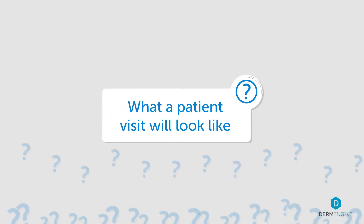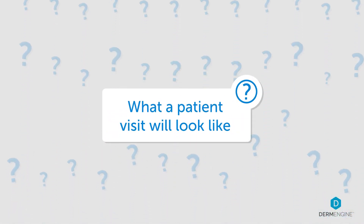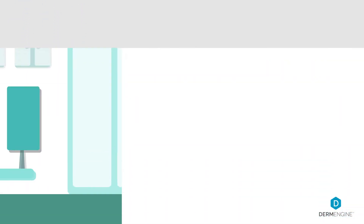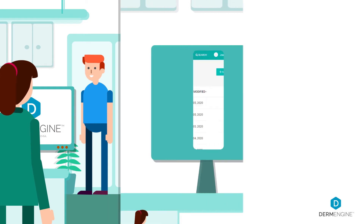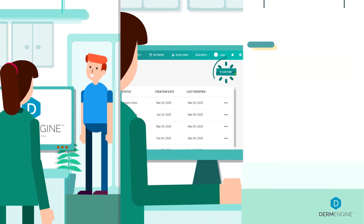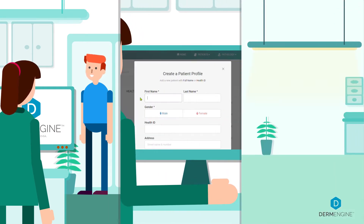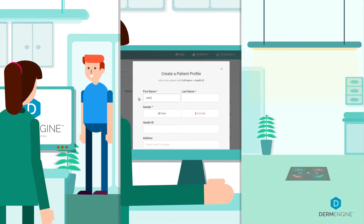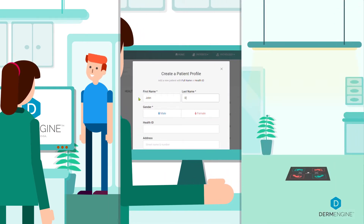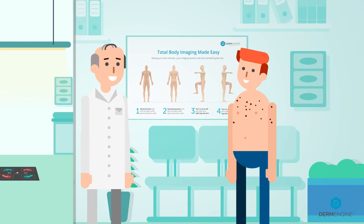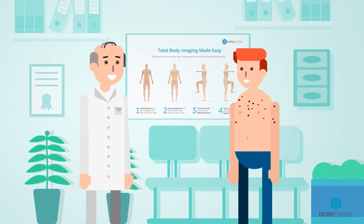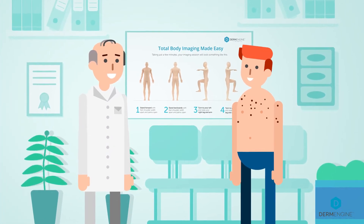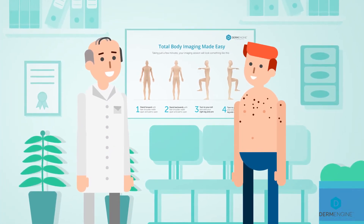Let's get started with showing you what a patient visit will look like. When the patient first arrives, they will be registered in DermEngine and led to the private imaging room to disrobe. The provider will then inform the patient of the different poses and images that will be taken on the app.